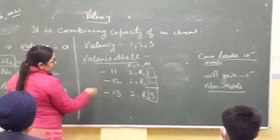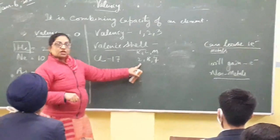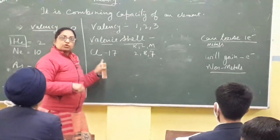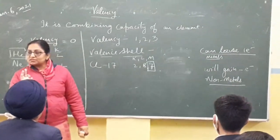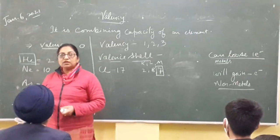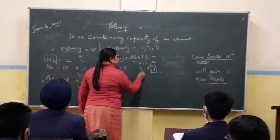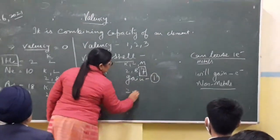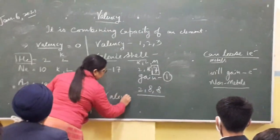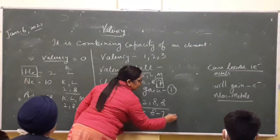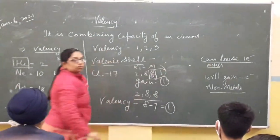Now I am taking the next example — chlorine. You can see the configuration of chlorine. Its atomic number is 17. In the valence shell, it has seven electrons. Now, it is not in the state of losing these seven electrons — they are strongly held by nuclear forces, strongly attracted by the positive charge. So what will it do? It will gain one electron and its configuration will become stable. It will achieve a stable configuration by gaining one electron, so its valency is one. You can find the valency by subtracting the valence electrons from eight.